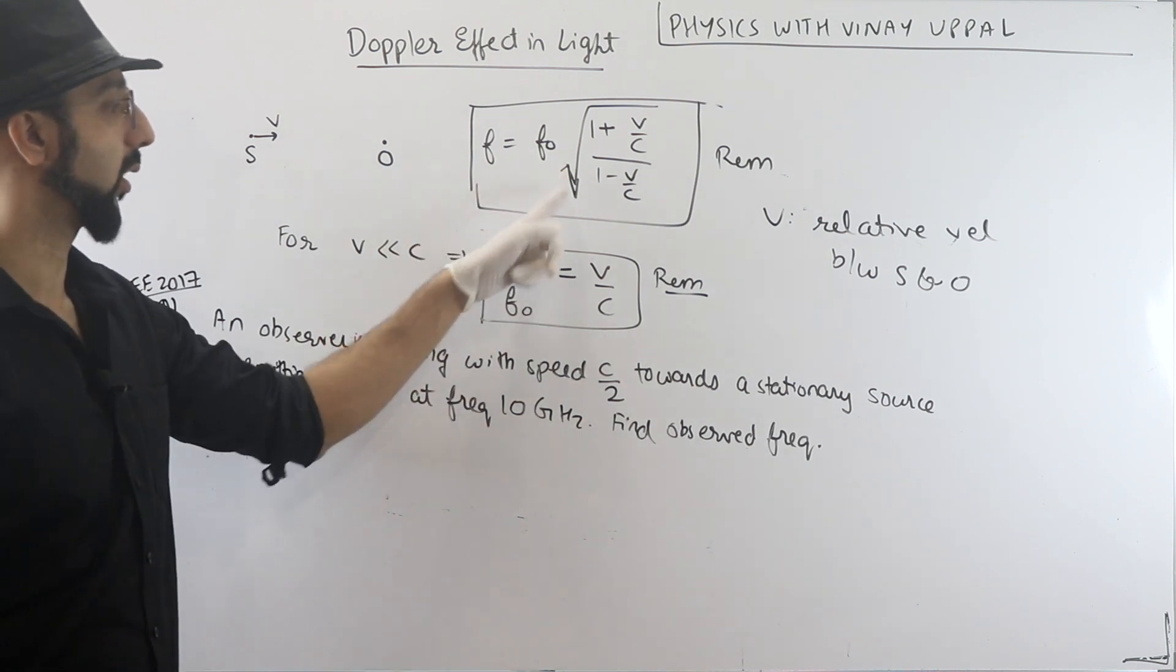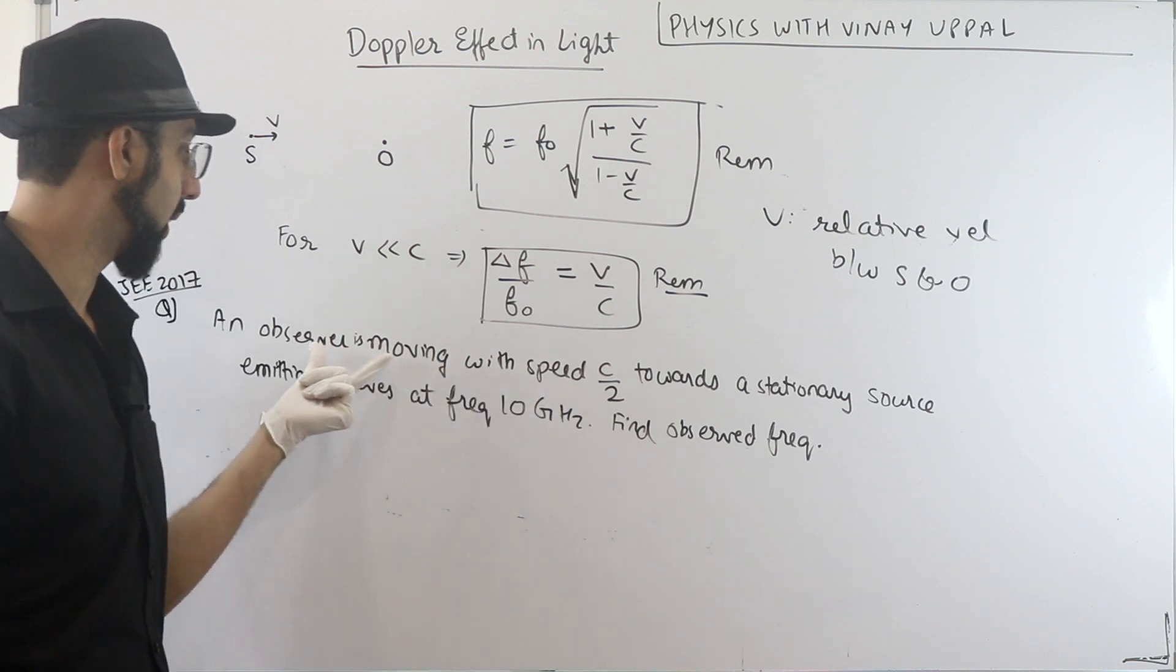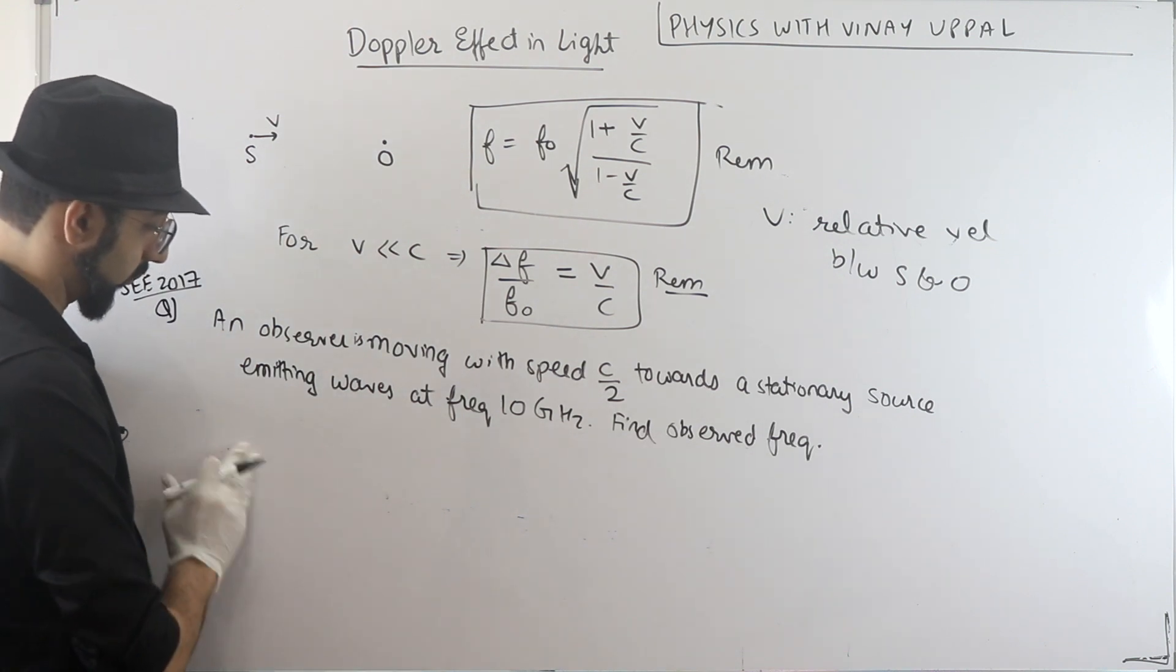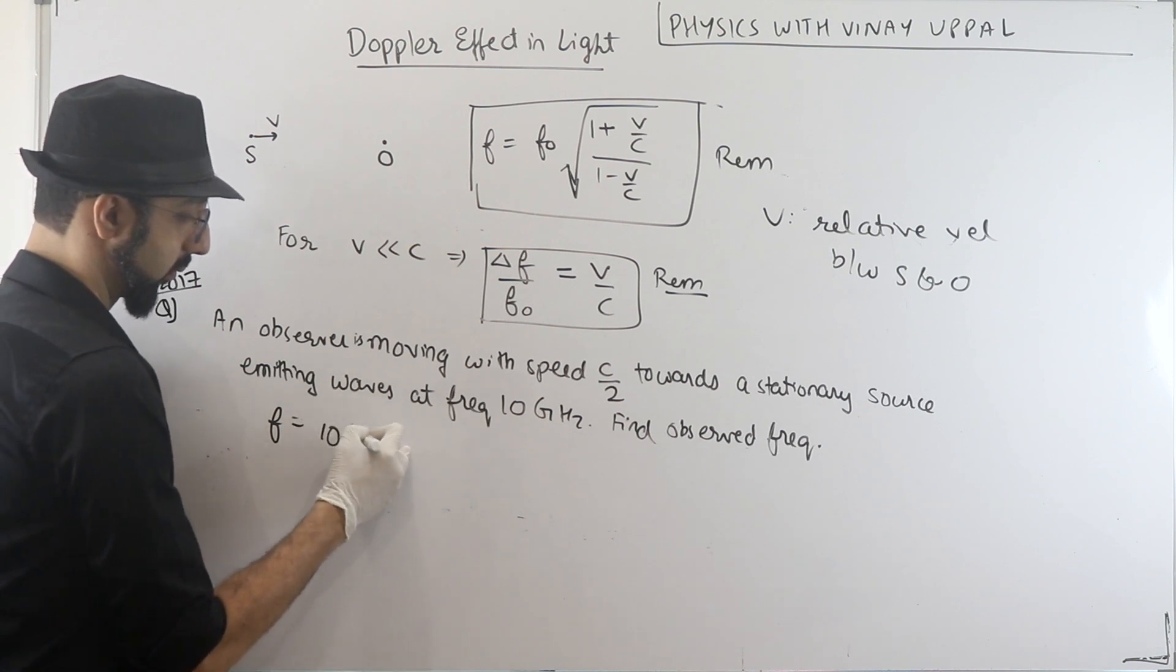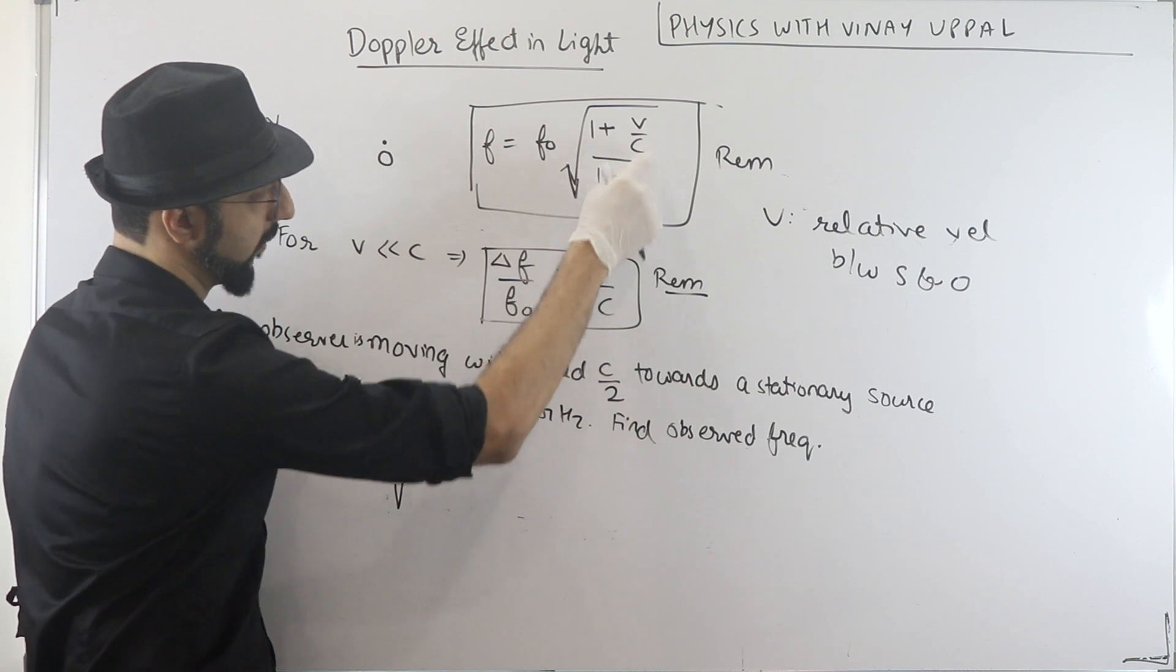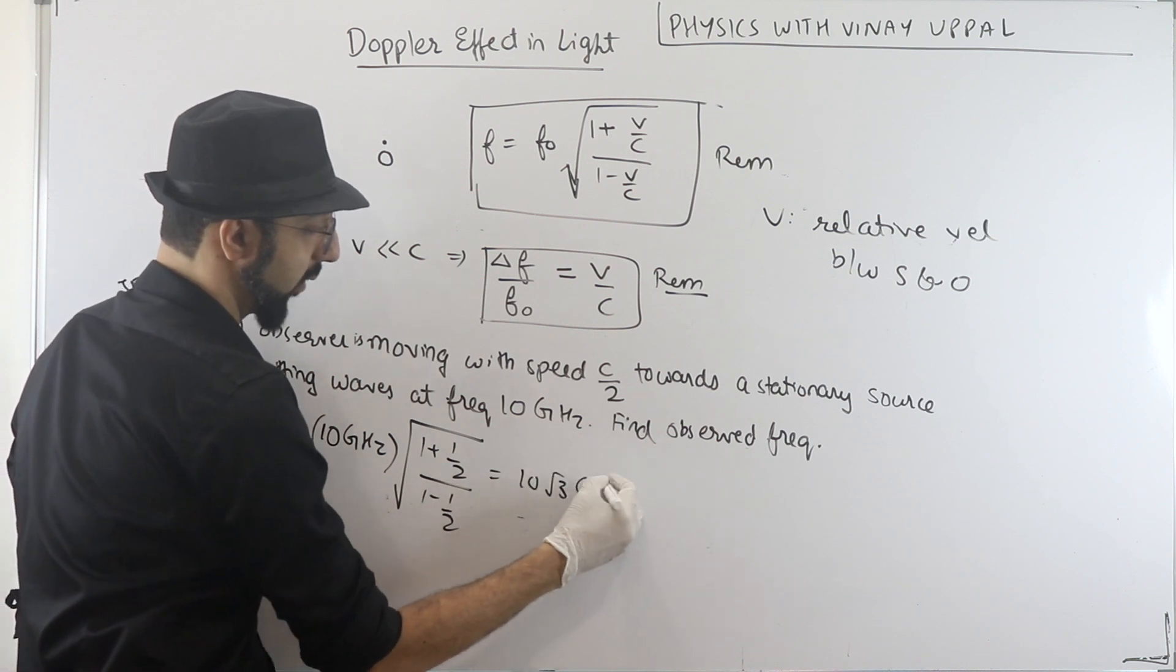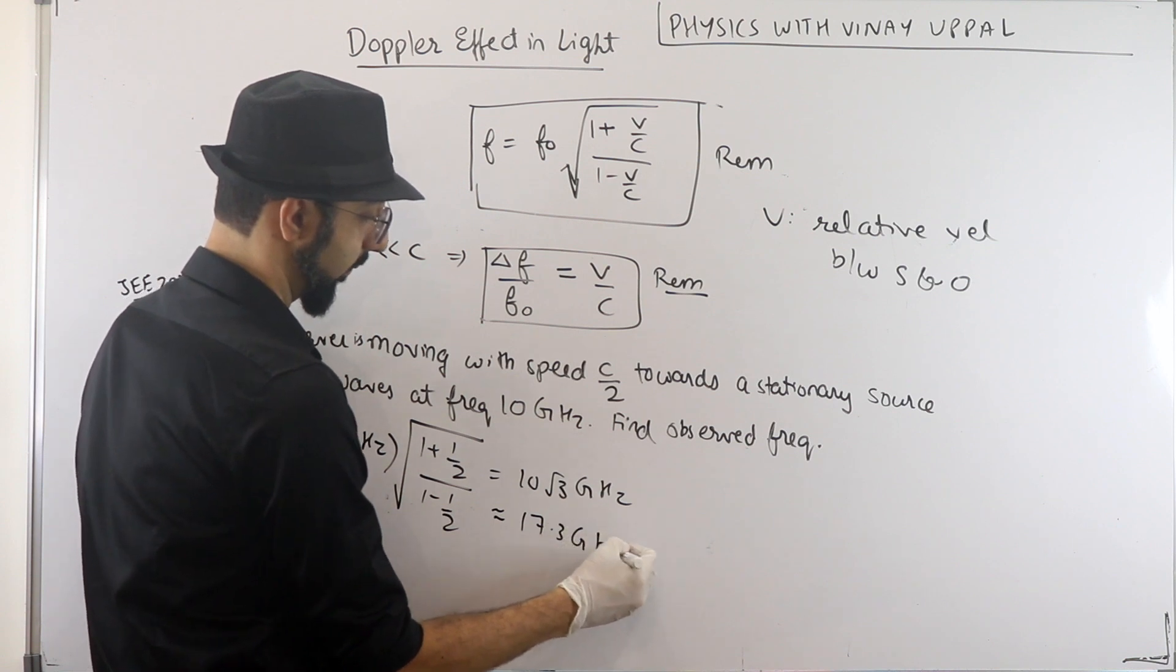So we will use this formula. We will use this because this is only when v is much much lesser than c. Jabki aap observer is moving at speed c by 2. So relative speed is c by 2. Therefore, I have frequency would be f0 10 GHz. So root of 1 plus v by c, so v by c is half divided by 1 minus half. So 10 root 3 GHz will be approximately 17.3 GHz.